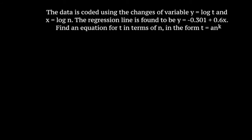In this problem, we're actually starting off with the regression line and working back to get the relationship between t and n. So we're starting off with y is equal to minus 0.301 plus 0.6x. The first thing we need to do is substitute in the changes of variable. So y is equal to log t and x is equal to log n.